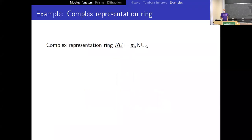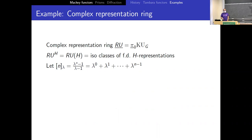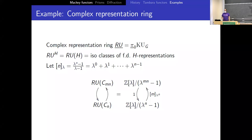Another example of a Tambara functor is the complex representation ring of a group — isomorphism classes of finite dimensional complex representations. For finite cyclic groups, letting λ be the default representation of the circle on ℂ and defining the λ-analog of n as this sum, the Mackey functor structure gives RU(C_n) = ℤ[λ]/(λ^n − 1), and the transfer is a twisted version involving this λ-analog.